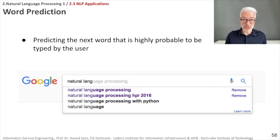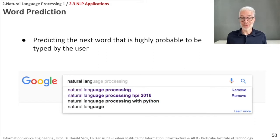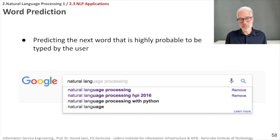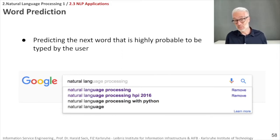Rather similar is the task of word prediction, which most prominently happens when you type a search query or when you are typing text on your mobile phone. The auto-correction function is nothing else than word prediction — it tries to continue what you are already writing with the most probable word. In Google, for example, when you type your query, you can clearly see the most probable search queries that share the same prefix as what you are typing.